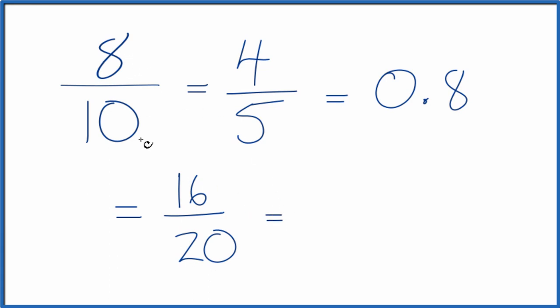Let's just multiply the numerator and denominator, both of those, by 3. 8 times 3 is 24. 10 times 3 is 30. And that's another equivalent fraction for 8 tenths.